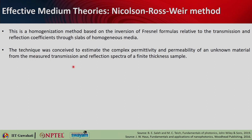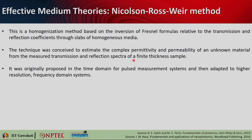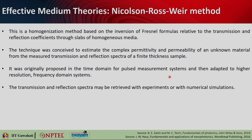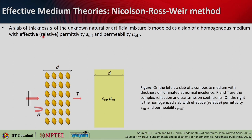This technique was conceived to estimate the complex permittivity and permeability of an unknown material from the measured transmission and reflection spectrum of a finite-thickness sample — essentially reverse engineering to find what kind of material provides a given permittivity and permeability. It was originally proposed in the time domain for pulsed measurement systems, then adopted for higher-resolution frequency-domain systems. A slab of thickness d of unknown natural or artificial mixture is modeled as a slab of homogeneous medium with effective relative permittivity epsilon_effective and mu_effective.